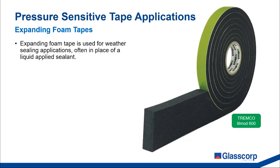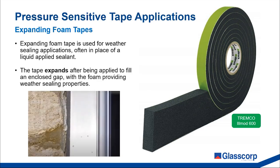Expanding foam tape is used for weather sealing applications, often in place of a liquid applied sealant. The tape is pre-compressed and expands after being applied to fill an enclosed gap, with the foam providing weather sealing properties. We carry the range of LMOD 600 expanding foam tape from Tremco — a UV-stable, acrylic-impregnated joint sealing tape used in construction control and expansion joints.